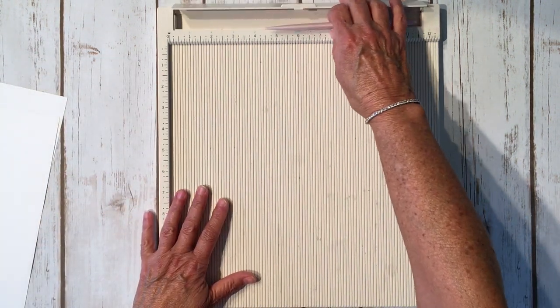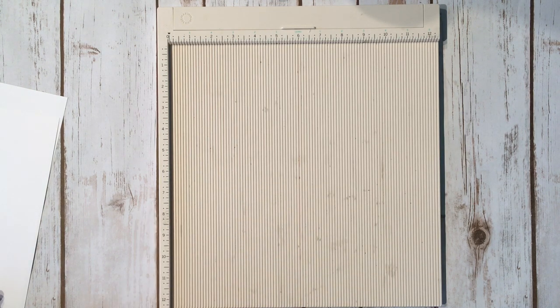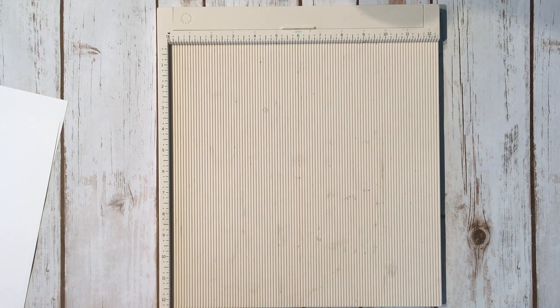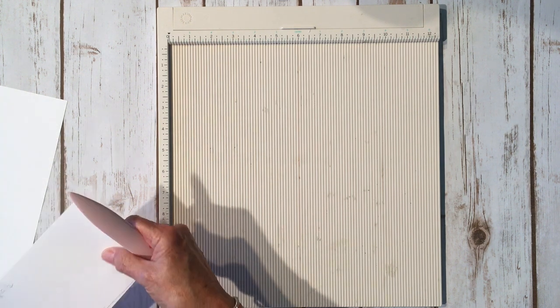So what you're going to need: your scoreboard, your paper trimmer, your cardstock, any design paper that you want to use, some glue, some score tape or wet glue, whatever your adhesive of choice is, and a bone folder.